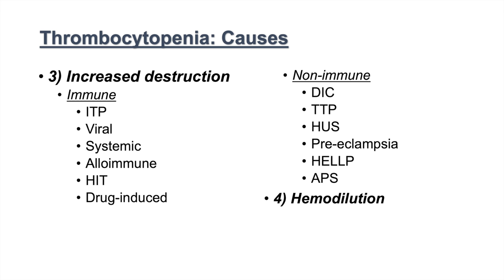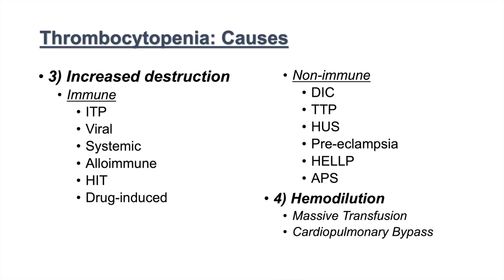The fourth category is hemodilution. This can occur from massive transfusions, where giving the patient a large volume of fluids dilutes their thrombocyte count. It can also result from cardiopulmonary bypass procedures.